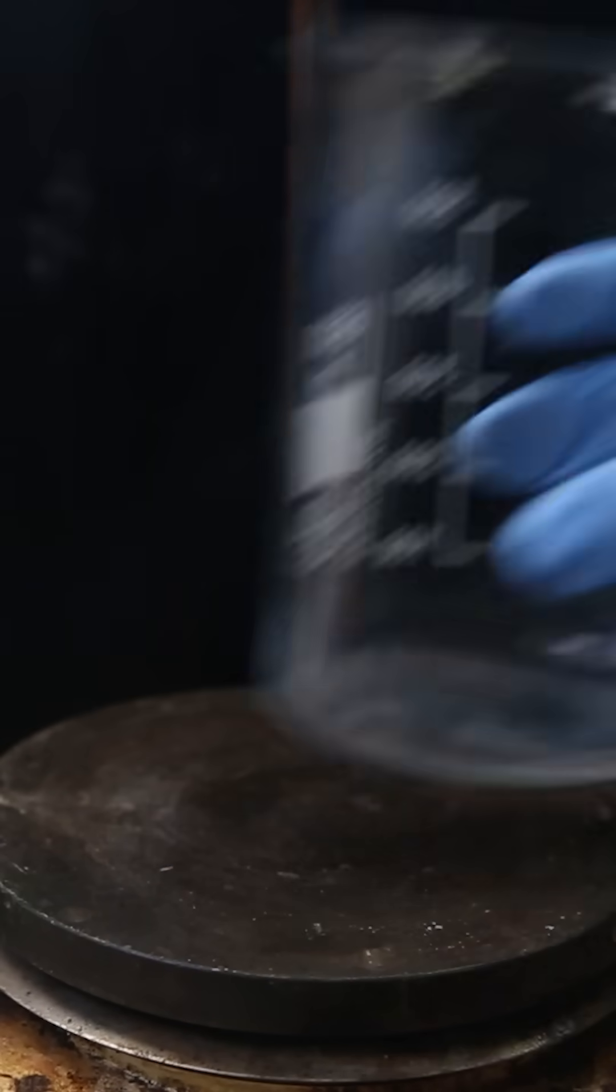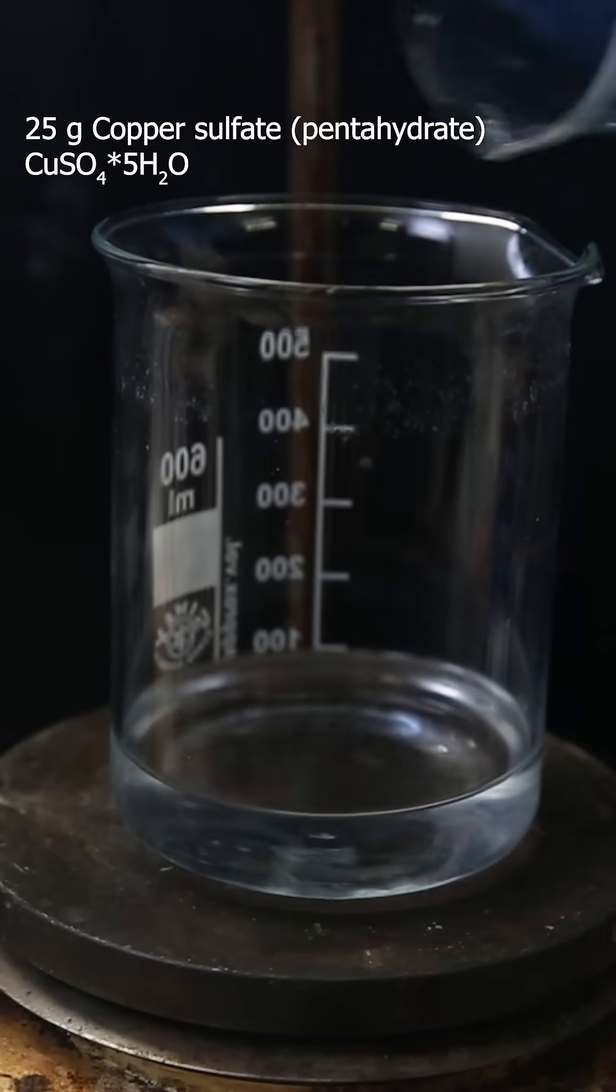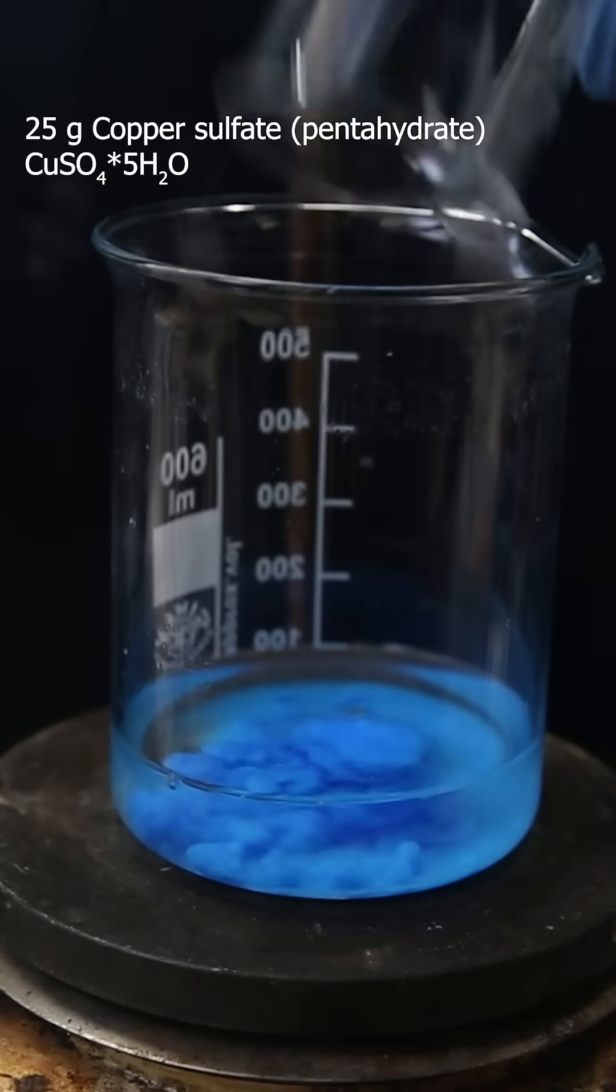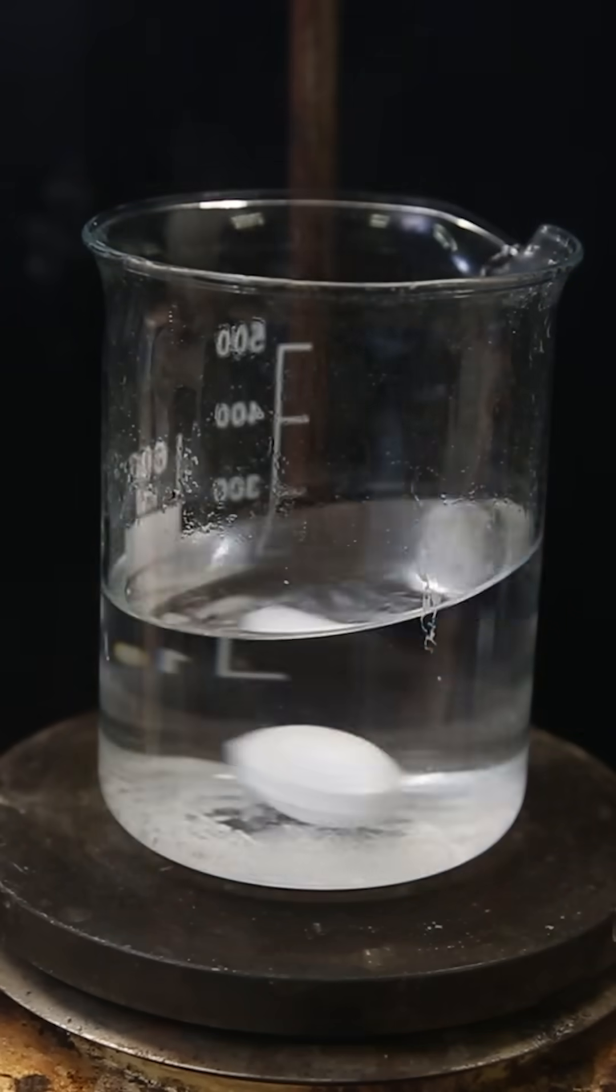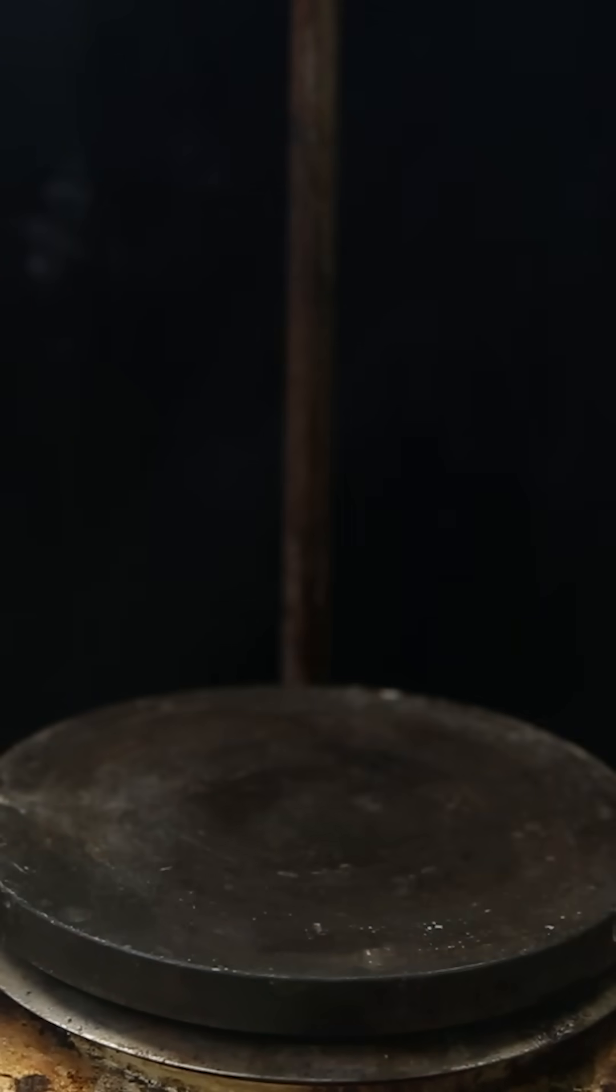I set this aside and then set up a new beaker with heating in which I add 100 ml of water and 25 grams of copper sulfate. When it has dissolved, I combine the two solutions. Nothing happens yet and I set this aside.